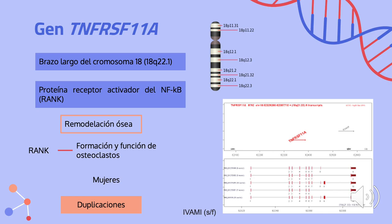El gen TNFRSF11A está situado en el brazo largo del cromosoma 18, en la posición 18Q22.1. Este codifica la proteína receptor activador del NFKB, también llamado RANK, que juega un papel importante en la remodelación ósea. Durante este proceso ayuda a dirigir la formación y la función de los osteoclastos que descomponen el tejido óseo. Las mutaciones en este gen aumentan el riesgo de la forma clásica de la enfermedad en mujeres, pero se desconoce la razón. Se han identificado dos mutaciones en este gen responsables de esta enfermedad; ambas son duplicaciones, es decir, que copian de manera anormal un segmento de material genético en el gen. A través de un mecanismo que no se entiende bien, estas mutaciones parecen sobreactivar la vía de señalización química que promueve la formación de osteoclastos, lo que estimula su producción en exceso y hace que estas células descompongan el hueso de forma anormal.